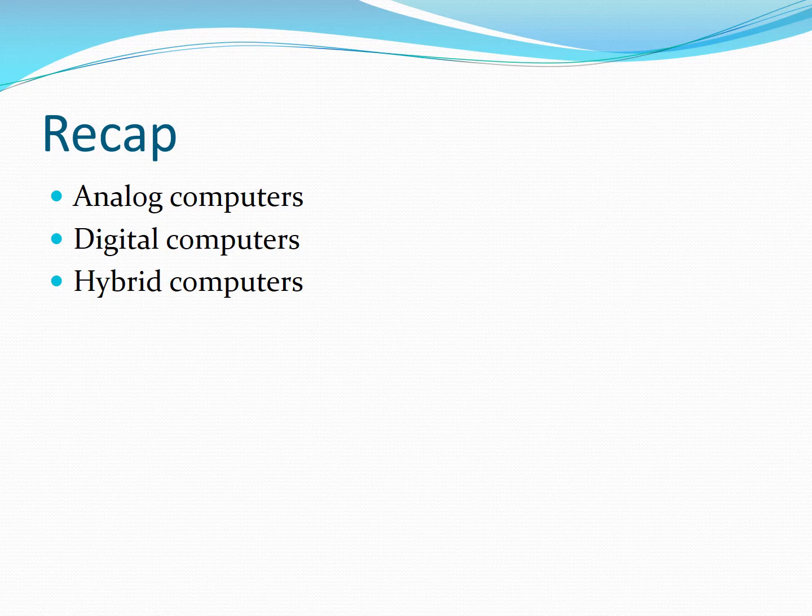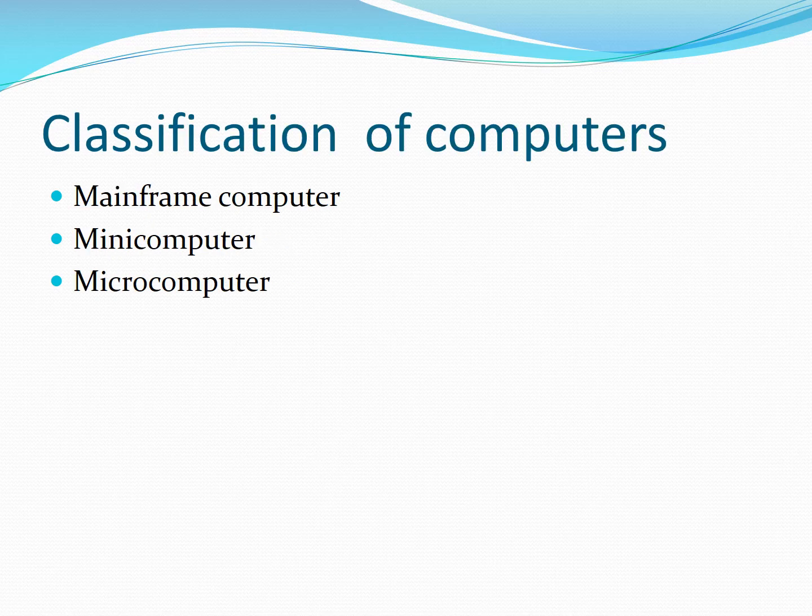Digital computers are general purpose computers used in various applications. Then the hybrid computer — the hybrid computer is basically a combination of both digital and analog computers and combines the characteristics of both. It is essentially a digital computer and is used in missiles, hospitals, and similar applications. So let's start today's lecture, in which we discuss the classification of computers.